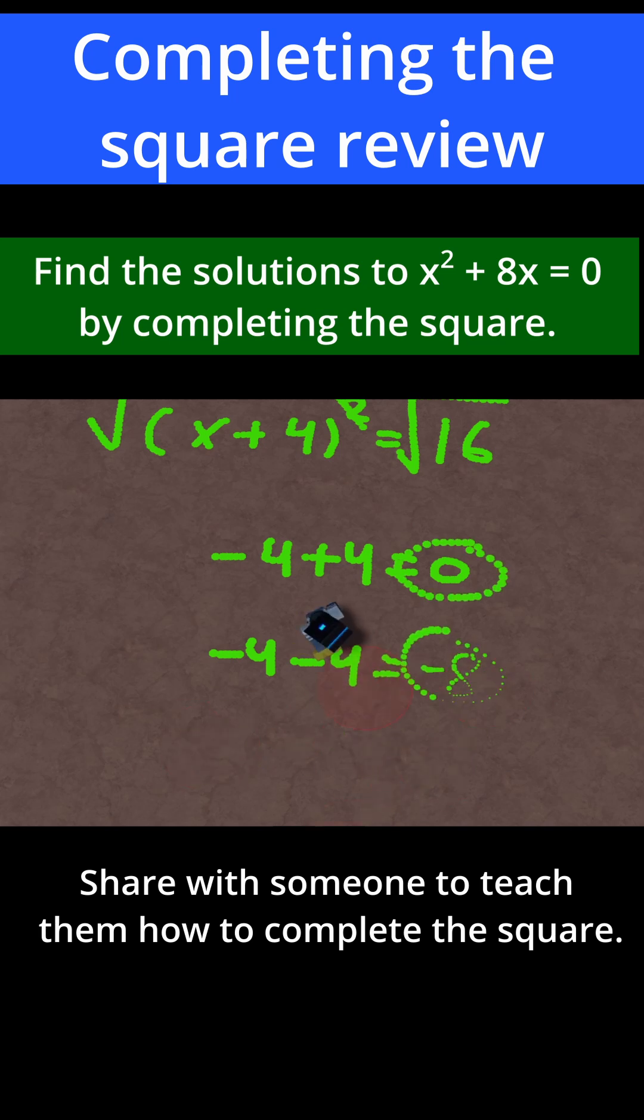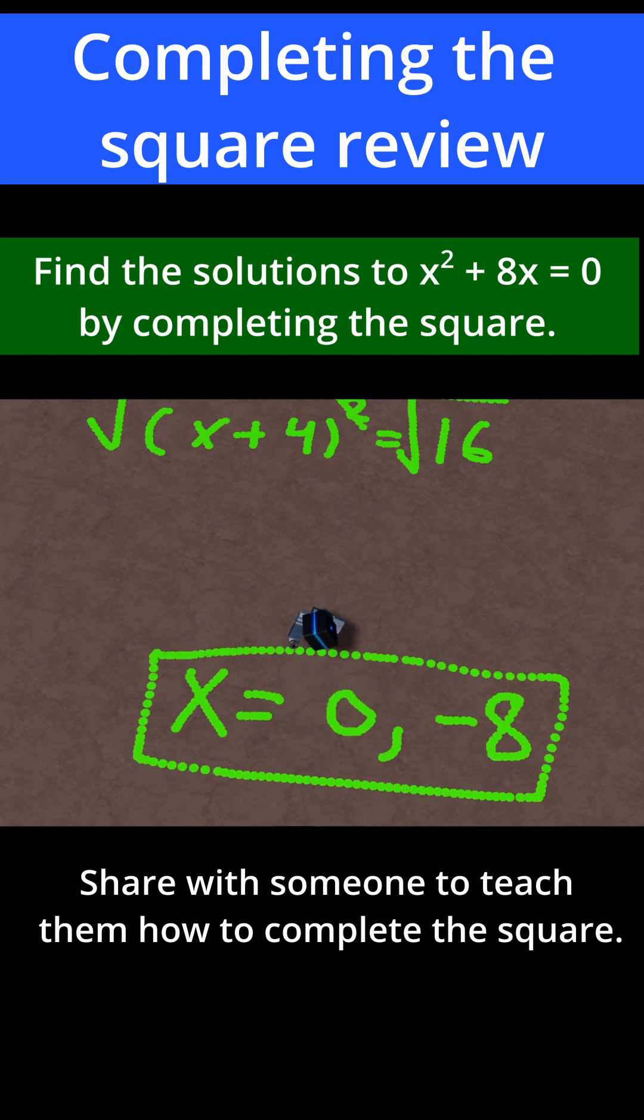Let me just rewrite all of this. By completing the square, we found out that x is equal to 0 and is equal to minus 8. Let's move on to some harder problems.